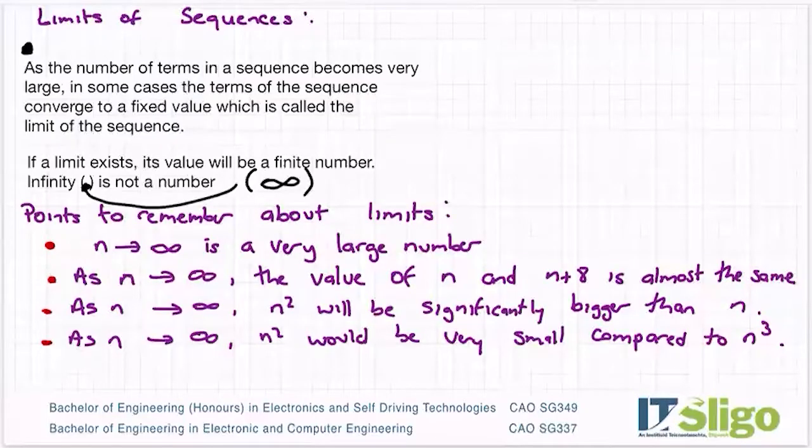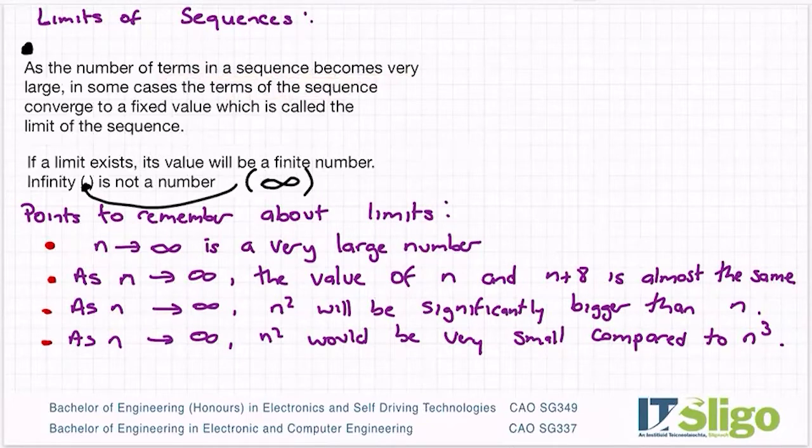So let's have a look at the limits of sequences and what exactly does that mean. As the number of terms in a sequence becomes very large, in some cases the terms of the sequence converge to a fixed value which is called the limit of a sequence.